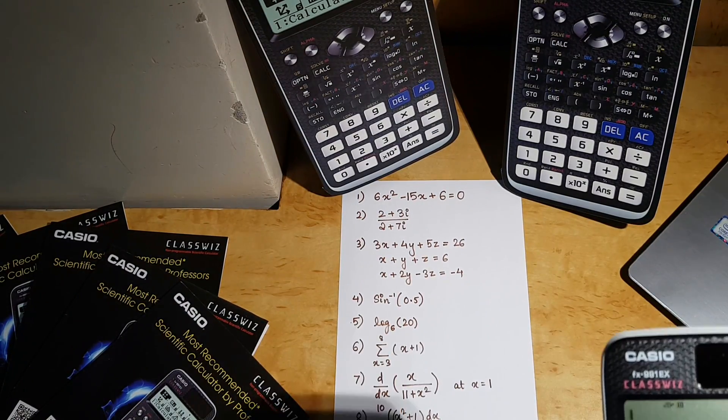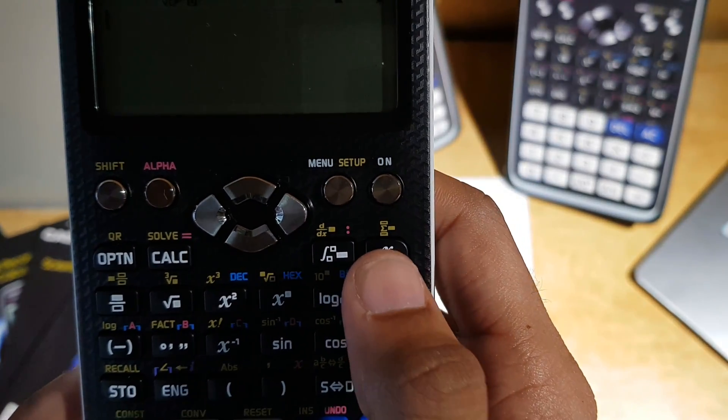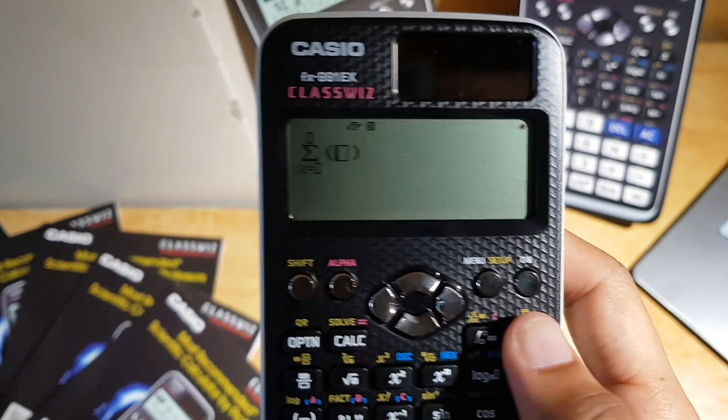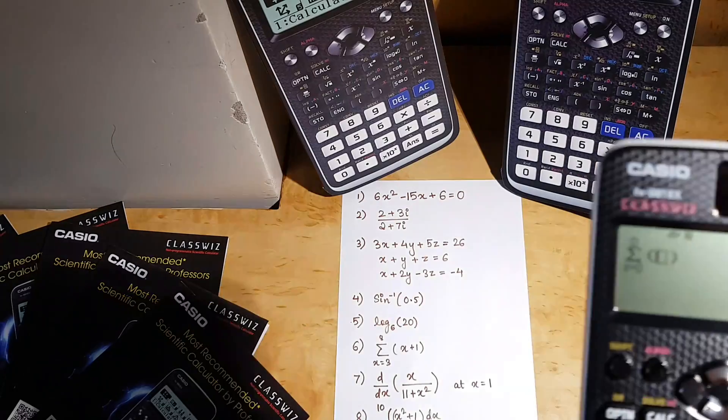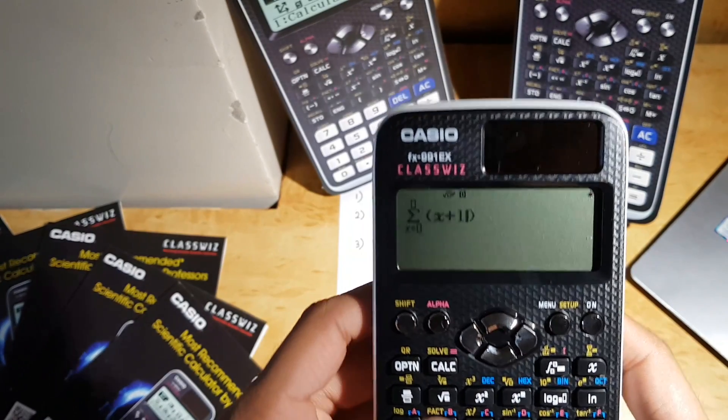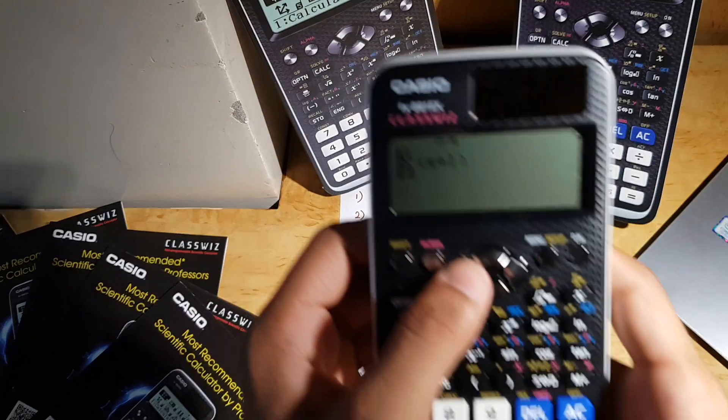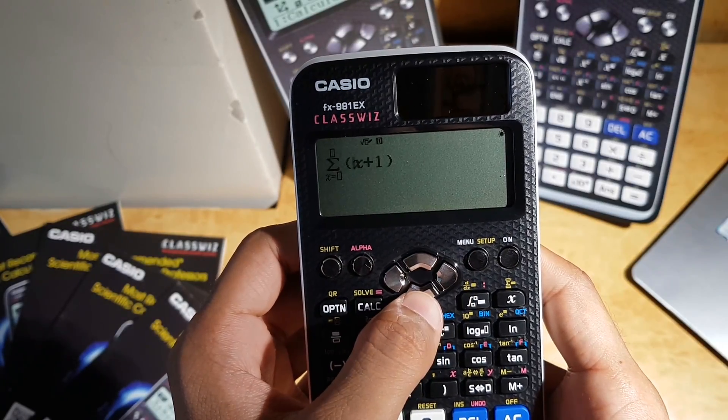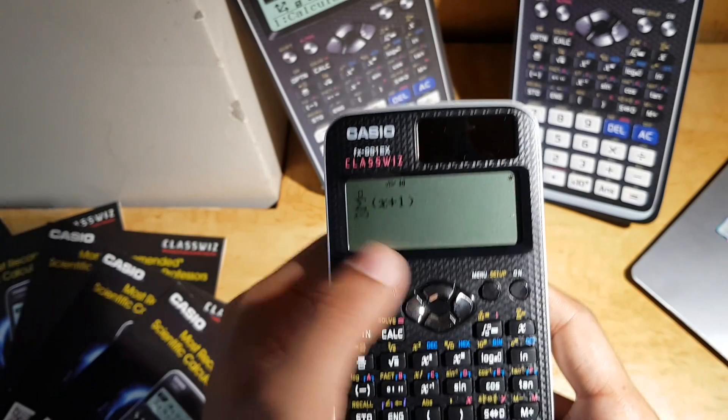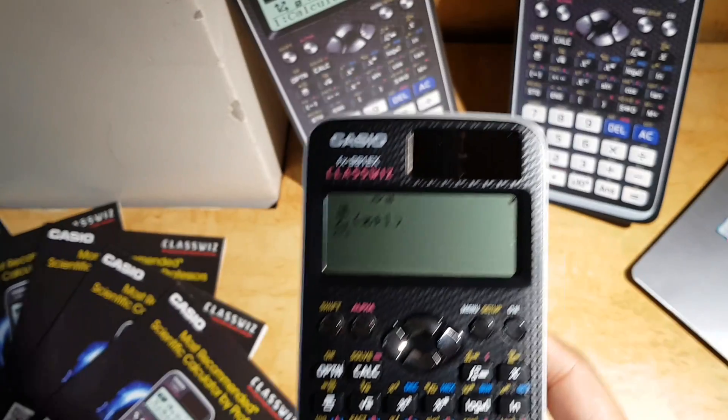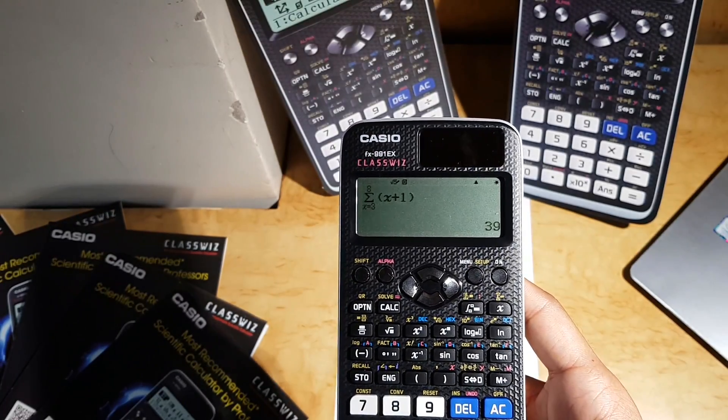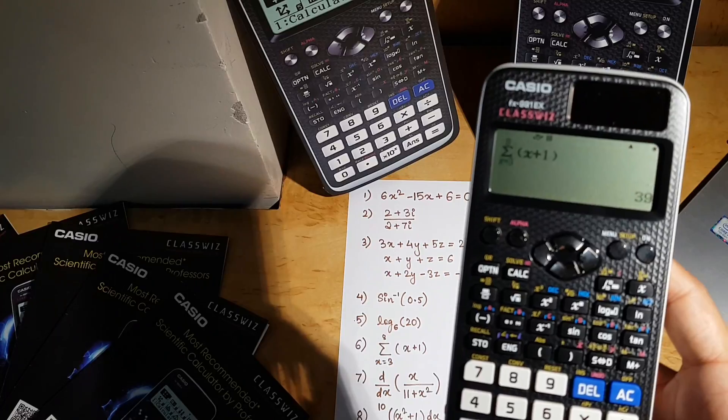Next we have the summation question. The summation key is over here, see, this one. I've selected that but nothing happens because I need to use the shift. This is the summation. Inside we have x plus 1, so I'm going to use this x plus 1. And on the limits, my lower limit will be 3 and upper limit will be 8. And as I enter, that's the answer. The summation of x plus 1 from 3 to 8.